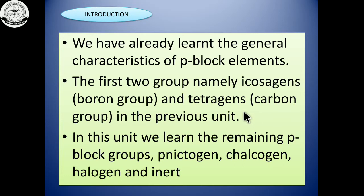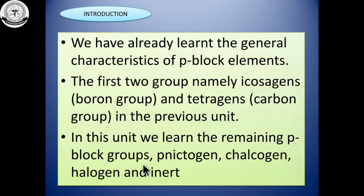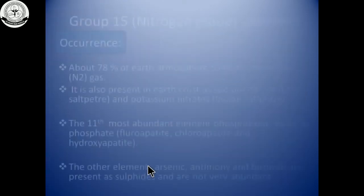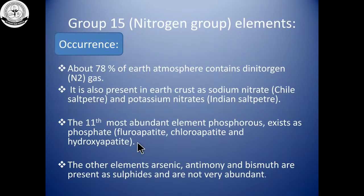Group 15 elements are nitrogen, phosphorus, arsenic, antimony, and bismuth. These are also called the nitrogen group or pnictogens. Now, let us discuss the occurrence of Group 15 elements.